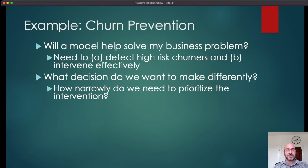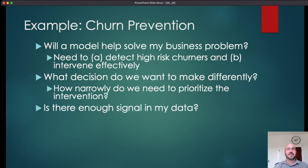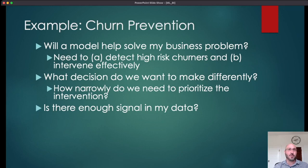For example, suppose your intervention is to give them a free month of your service. You have to be sure their risk of churn is high enough and that their typical reaction will be to stay long enough beyond that free period for it to be worth it. As for whether there's enough signal in the data: if you have a 10% overall churn rate and your model can only identify that half the people have an 11% churn rate and half have a 9% churn rate, that might not be enough discrimination to be worth it.